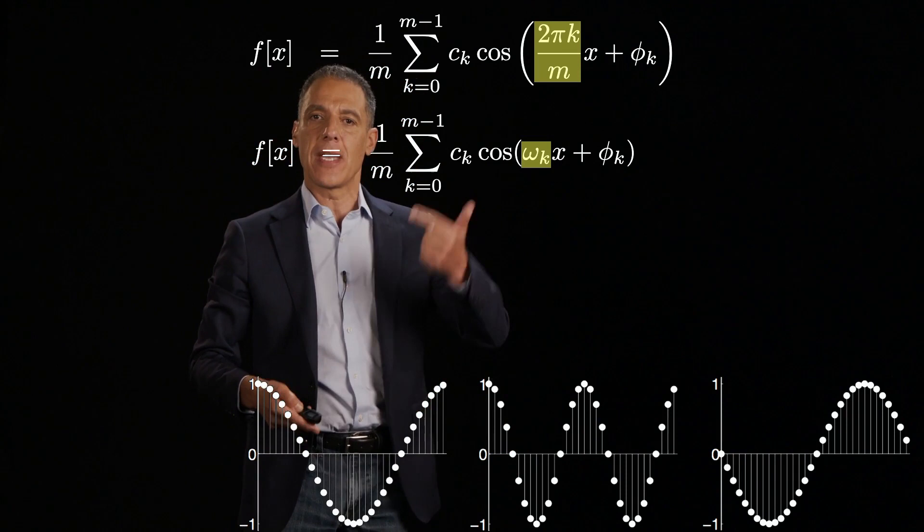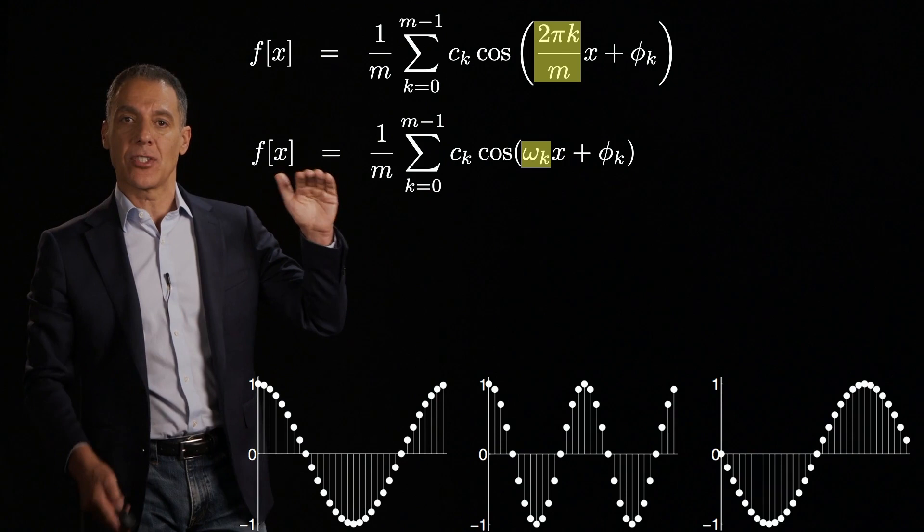So the amplitude depends on k, the frequency depends on k, and the phase depends on k. So for each iteration, we have a different frequency, a different phase, and a different amplitude. And we are saying that a signal can be represented as a sum of these cosines.